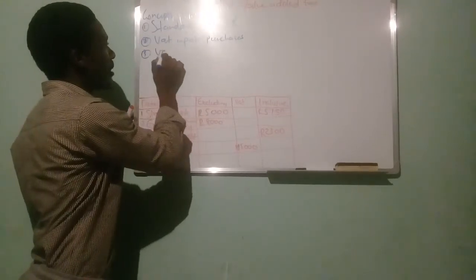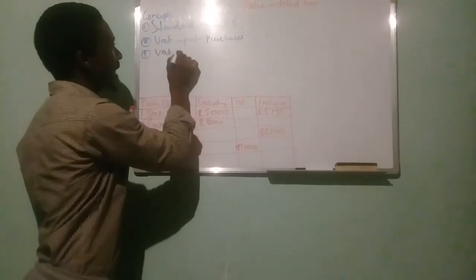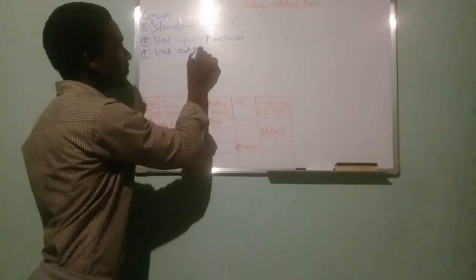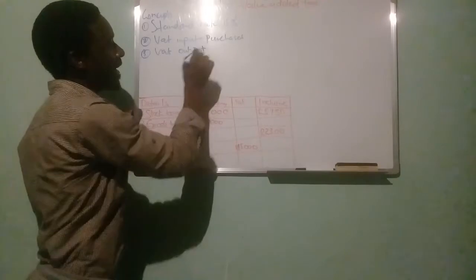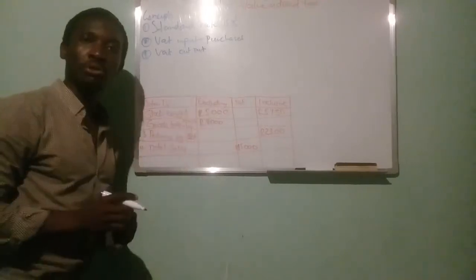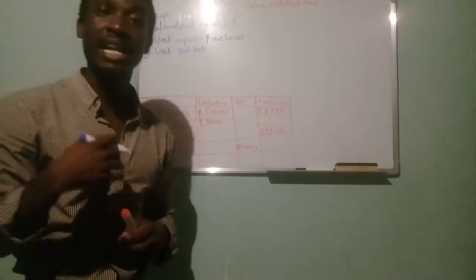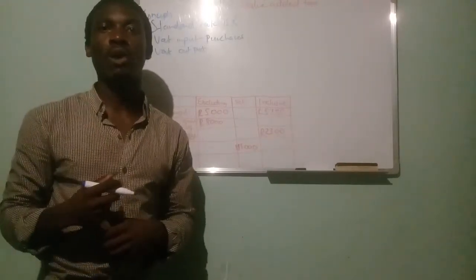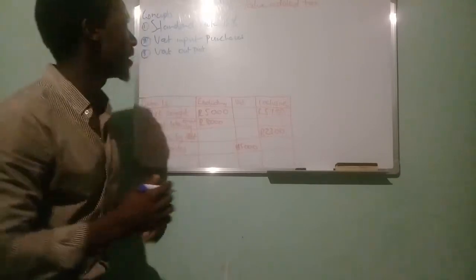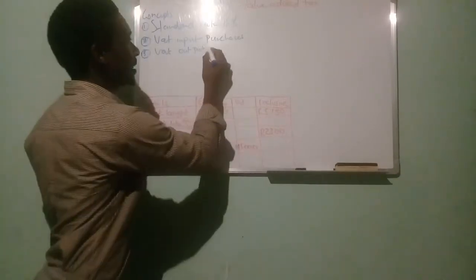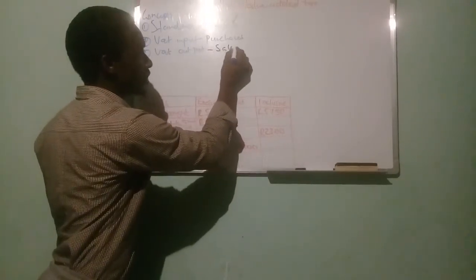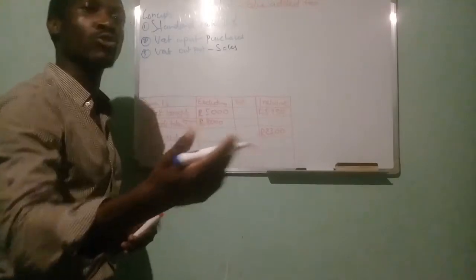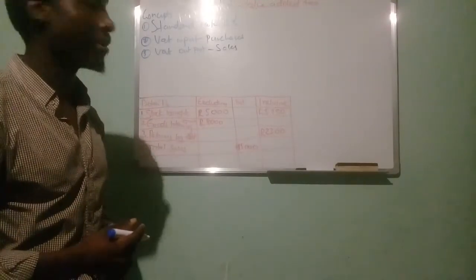Then we have what we call VAT output. VAT output is the VAT that we as a business charge to our customer. This is the VAT that is charged on sales, because we sell to our customers.